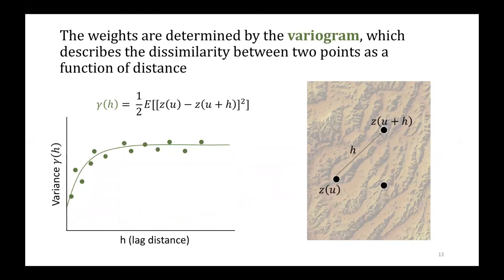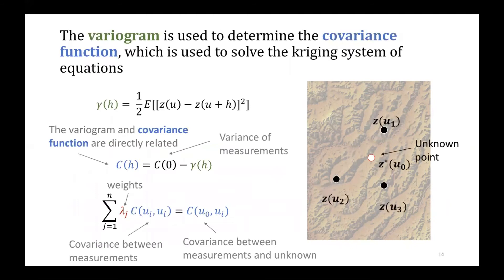These weights are determined by the variogram, which describes how dissimilarity between two points increases as a function of lag distance. So as the lag distance between any two points increases, the expected variance increases. The variogram is directly related to the covariance function, which is a measure of similarity. Once you have the covariance function, you can set up a system of linear equations that allows you to solve for the weights and make your kriging prediction. The covariance function also allows you to estimate the variance at each point — so this is your uncertainty estimate. Kriging can be thought of as a form of linear regression where the weights are determined by prior covariances.